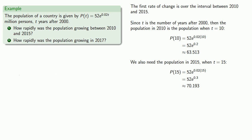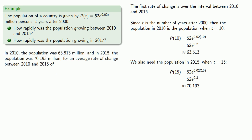Now let's record our answer. In 2010, the population was 63.513 million. In 2015, the population was 70.193 million. For an average rate of change between 2010 and 2015, we calculate end minus beginning over how long that change took. Since that change took place over 5 years, we have (70.193 - 63.513) / 5.